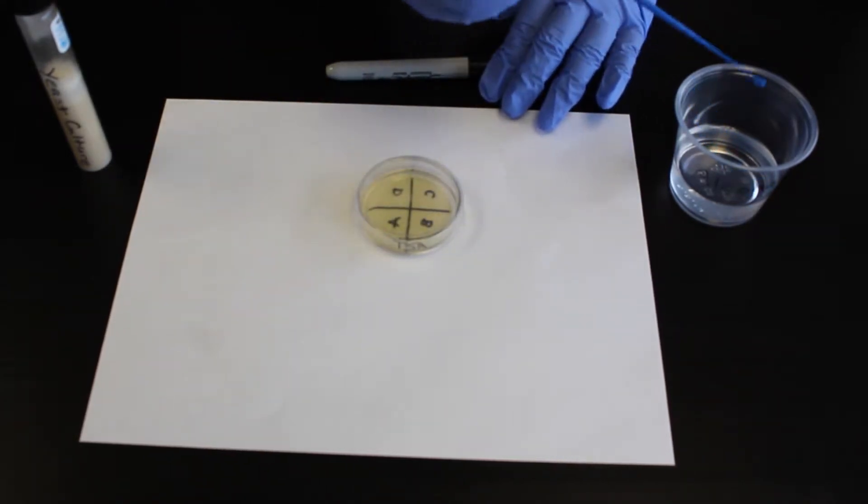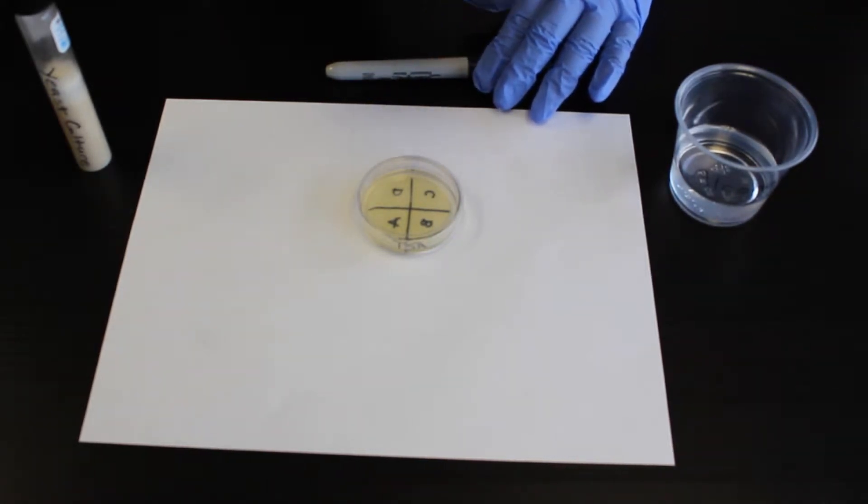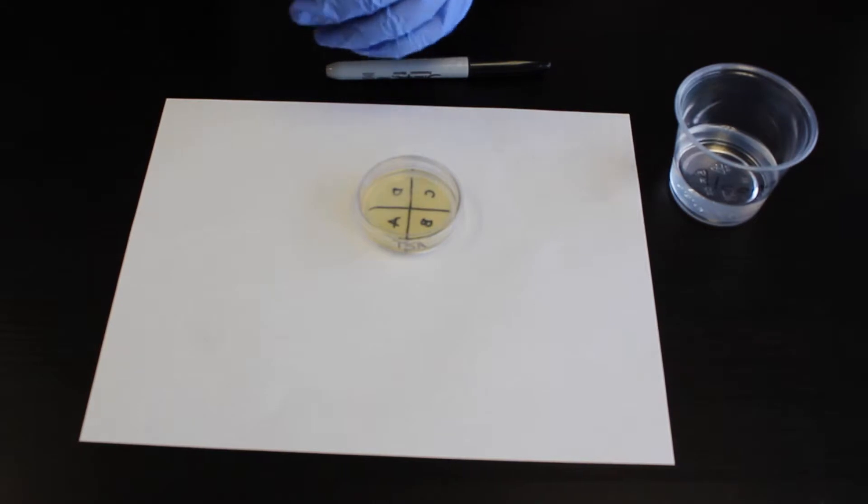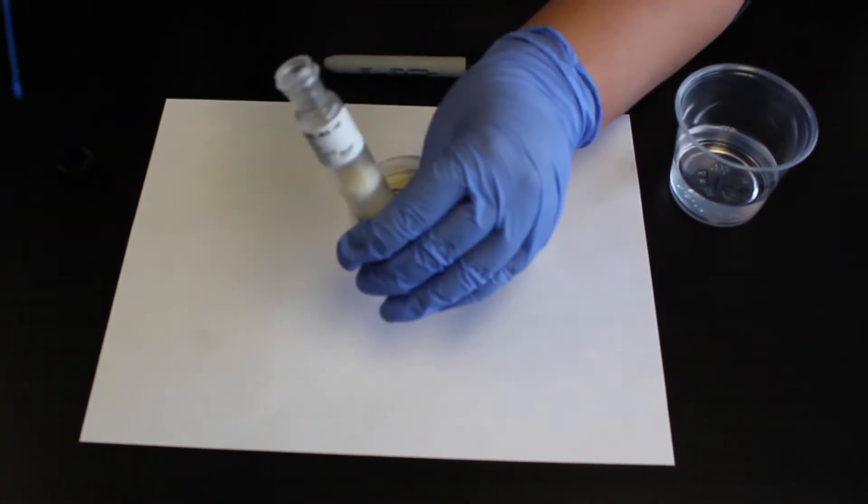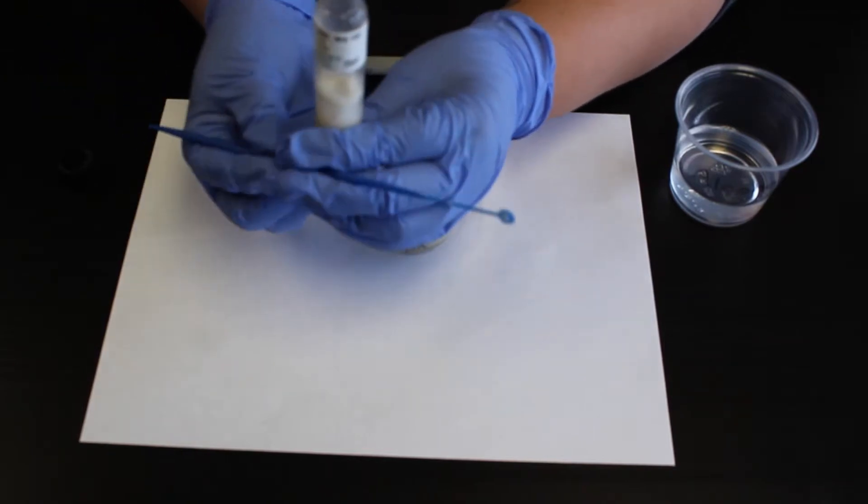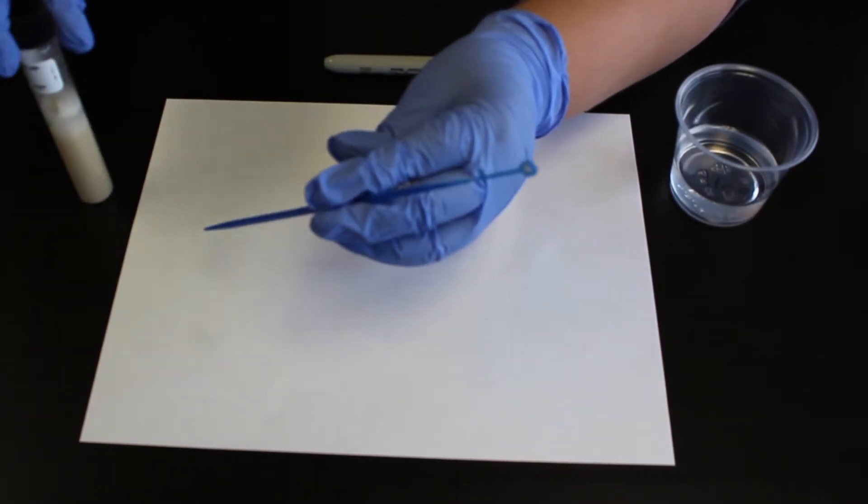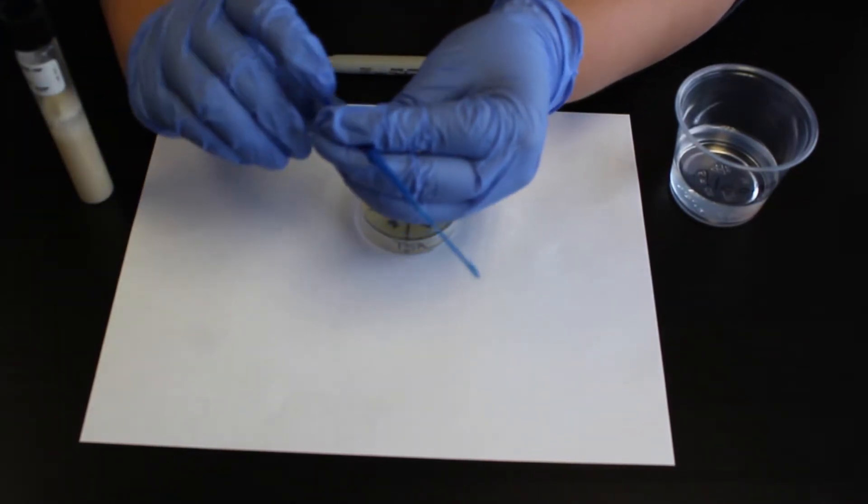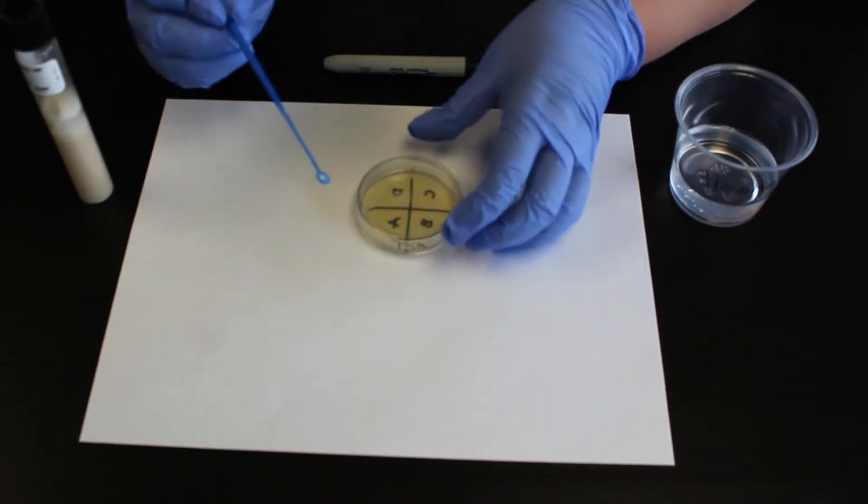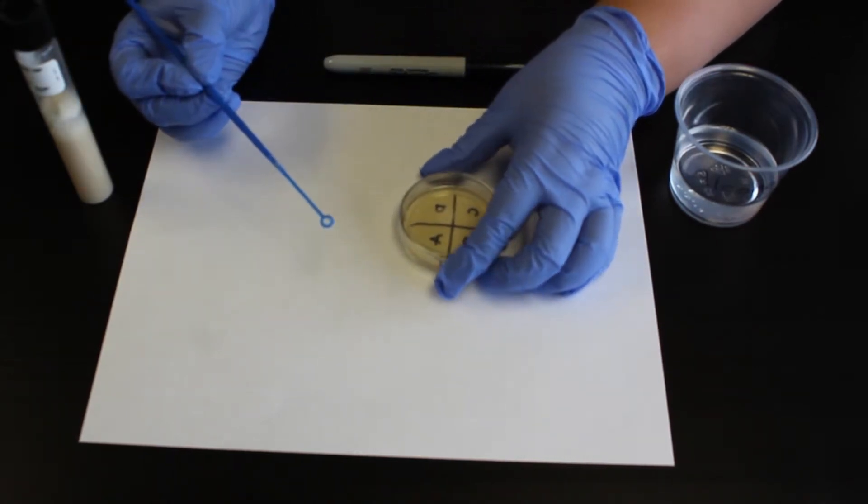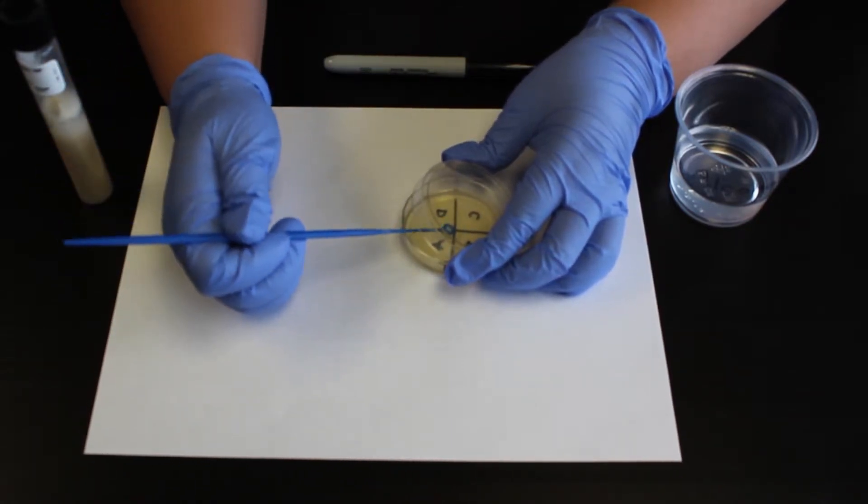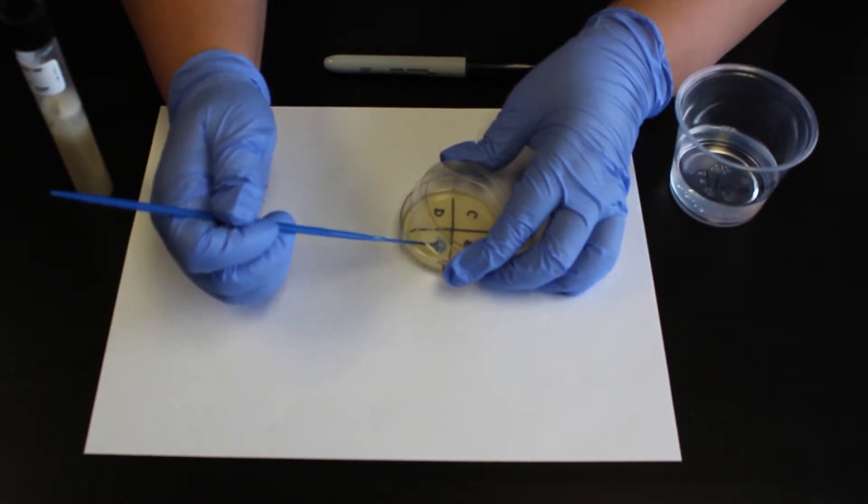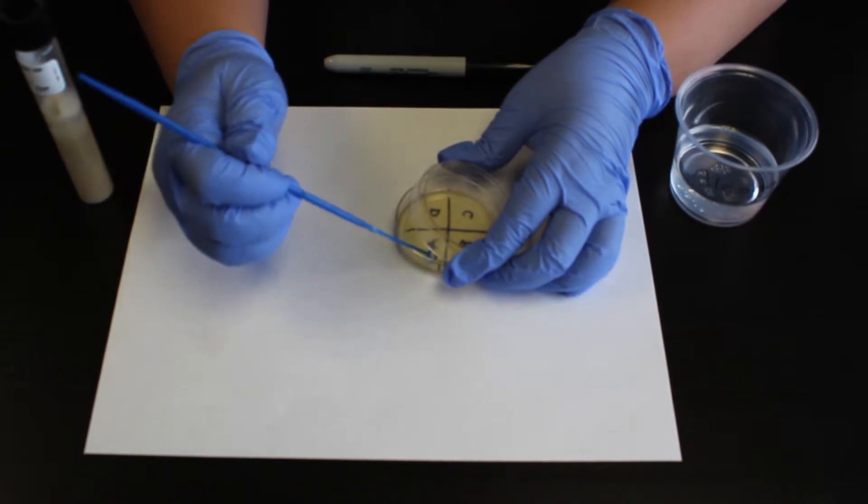Remove the loop from the alcohol and sling to rapidly dry. While holding the dry sterilized loop in the dominant hand, grasp the agar plate with the other hand, tilting the lid such that one centimeter space is opened above the A quadrant. Insert the loop and streak the A quadrant using a zigzag motion.